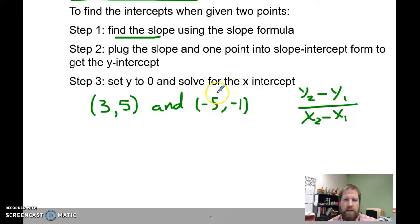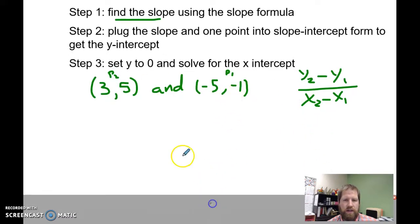Choose, let's see, let's go with this being point 1 and this being point 2, that way my values will turn out to be positive. So I have my y2, 5 minus my y1, negative 1, over x2, 3 minus x1, negative 5. 5 minus negative 1, or 5 plus 1 is 6, and 3 minus negative 5, or plus 5 is 8. So my slope is going to be 6 eighths, or 3 fourths.